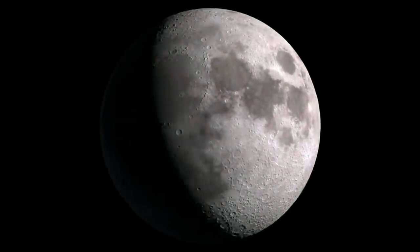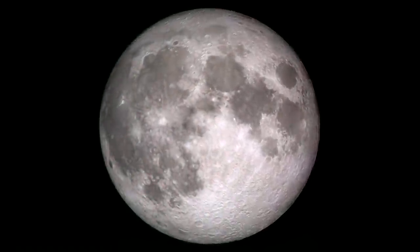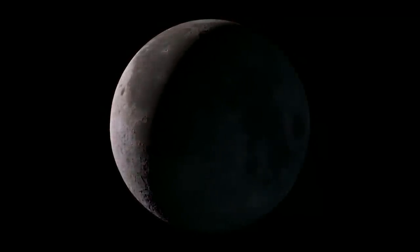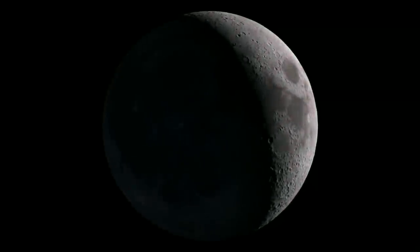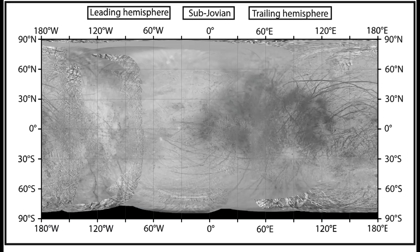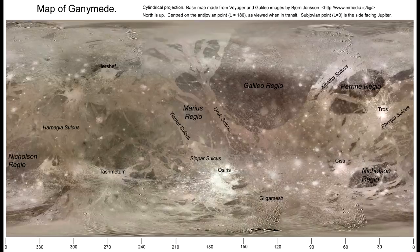With rotation, it's quite easy as well — you pick the pole that points above the plane of the solar system, the invariable plane based upon the mass and angular momentum of the solar system. Using this, they can come up with coordinate systems for all the moons: Io, Europa, Callisto, Ganymede — all of these are tidally locked and therefore keep the same face towards their parent body.